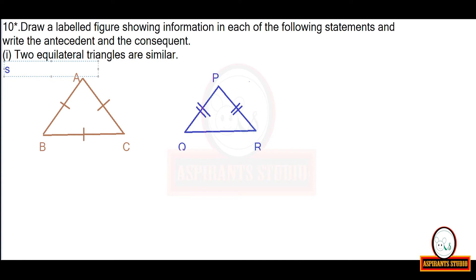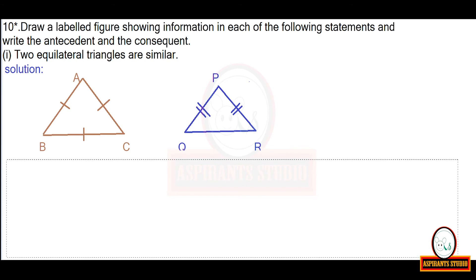Please note: by mistake the marking for QR in triangle PQR is not shown in the diagram. Mark QR with the same symbol used for PQ and PR. Show all three sides of triangle PQR with equal markings. Now write the solution: write the antecedent and the consequent for this statement.